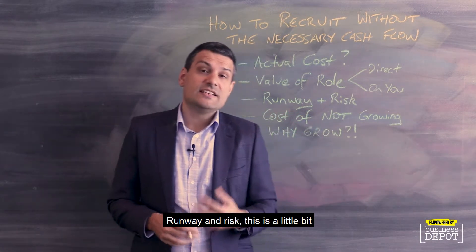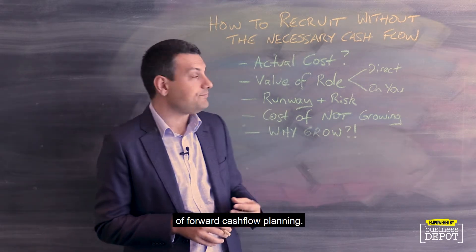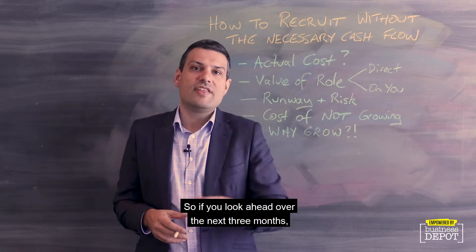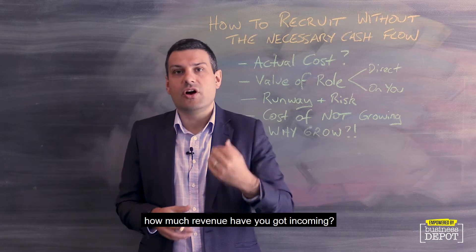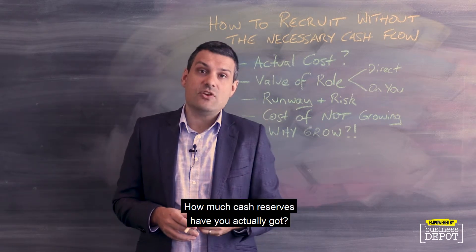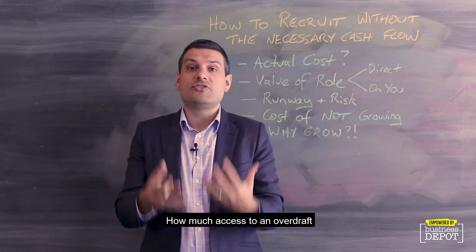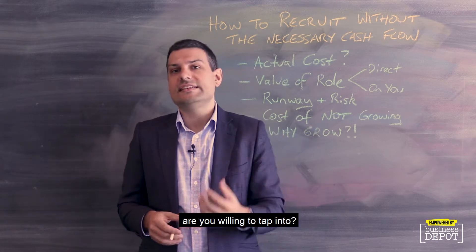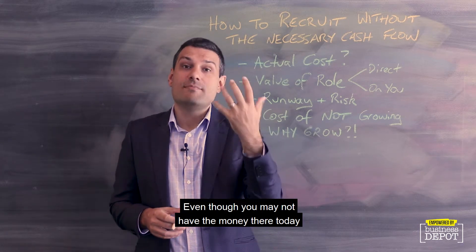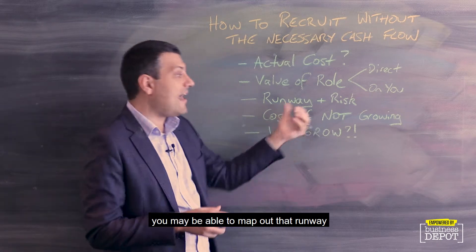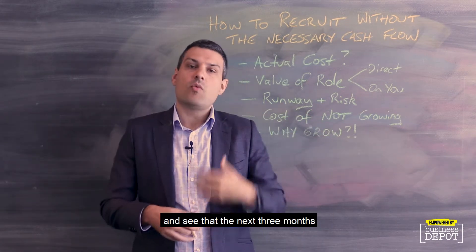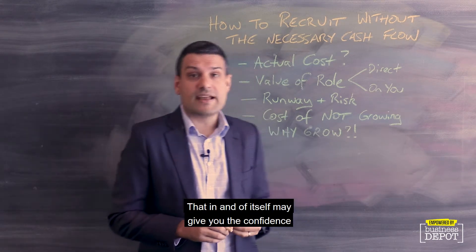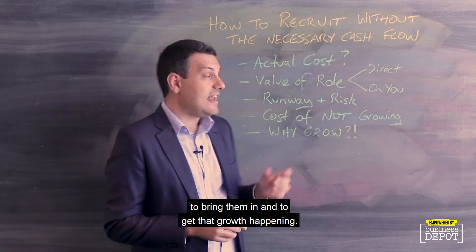Runway and risk — this is a little bit of forward cash flow planning. We've got an understanding that there may be a direct or indirect value to this role. So if you look ahead over the next three months, how much revenue have you got incoming? How much cash reserves have you actually got? How much access to an overdraft or other debt facilities have you got, and — which is where the risk comes in — are you willing to tap into? Even though you may not have the money today, you may be able to map out that runway and see that the next three months, while that person is getting up to speed, are not going to be as calamitous as you fear. And that, in and of itself, may give you the confidence to bring them in and get that growth happening.